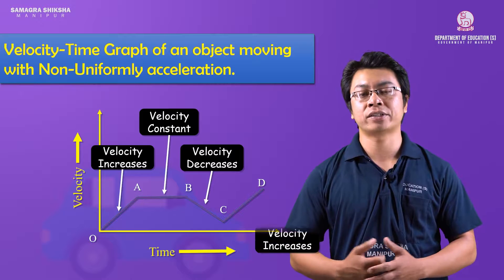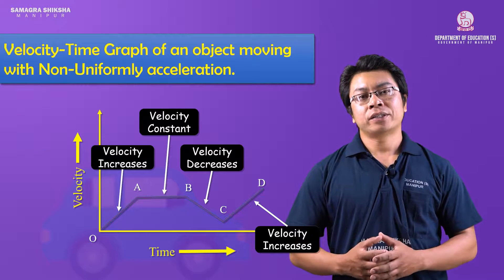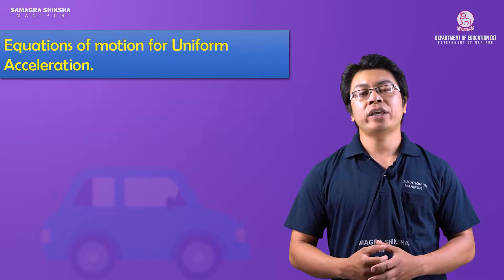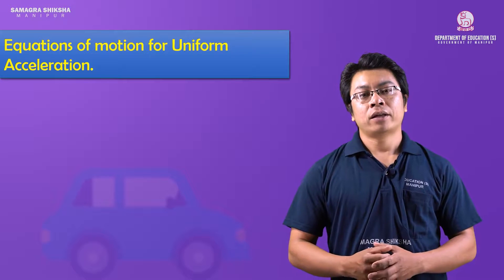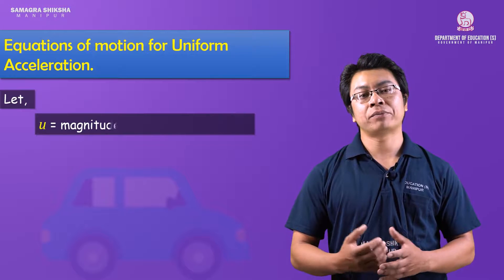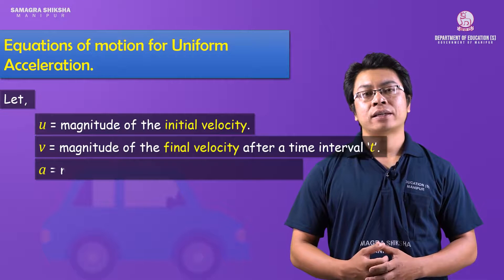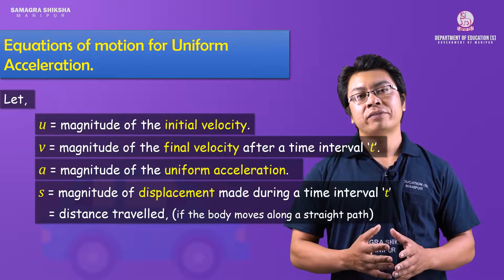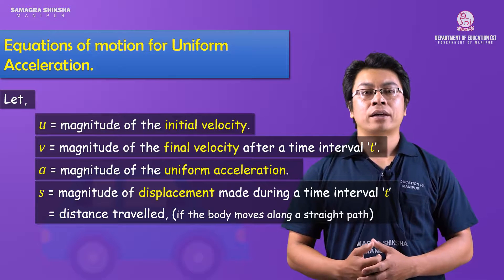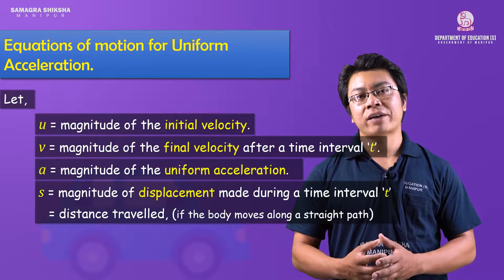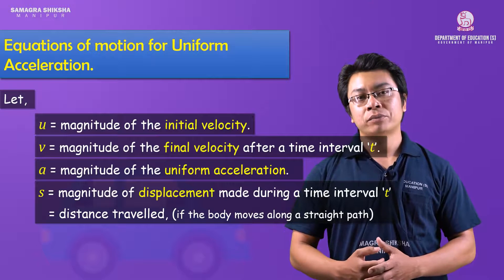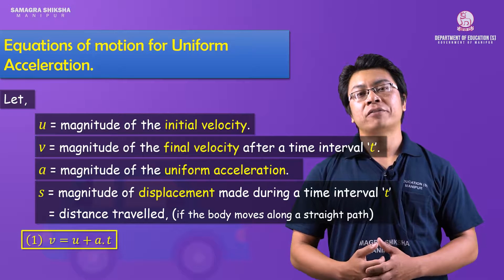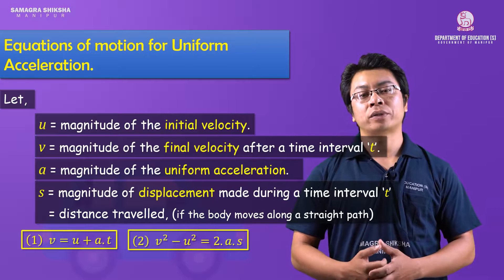Now let's study the equations of motion for uniform acceleration — the relationship between velocity, distance, acceleration, and time. Using initial velocity u, final velocity v after time t, uniform acceleration a, and distance traveled in time t as s, the three equations of motion are: v = u + at; v² − u² = 2as; and s = ut + ½at².